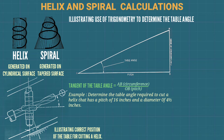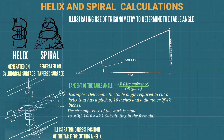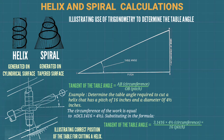Example: determine the table angle required to cut a helix that has a pitch of 16 inches and a diameter of 4.5 inches. The circumference of the work equals π times diameter, so that is 3.1416 times 4.5. Substituting into the formula: tangent of table angle equals 3.1416 times 4.5 divided by 16.